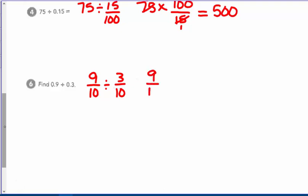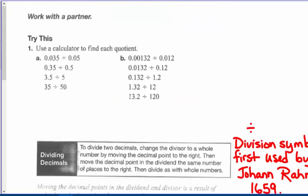Nine-tenths times ten-thirds — the multiplicative inverse. The tens cancel, and the threes cancel as well, so everything becomes one. Three times one is three. So nine-tenths divided by three-tenths equals three wholes.